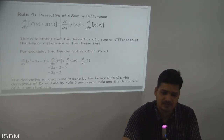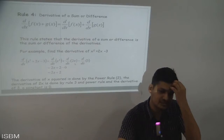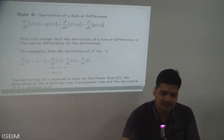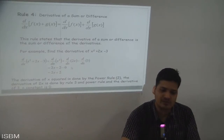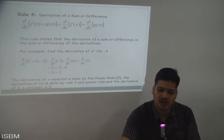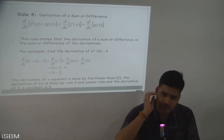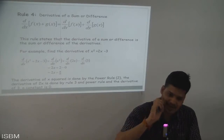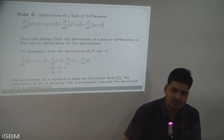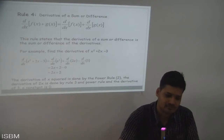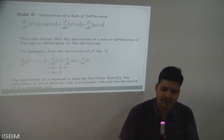So d/dx of x² is 2x. Then d/dx of 2x is 2, and d/dx of 3 — which is a constant — is 0. So the total becomes 2x + 2 − 0, and removing the zero the final value is 2x + 2, which we can also write as 2(x + 1).